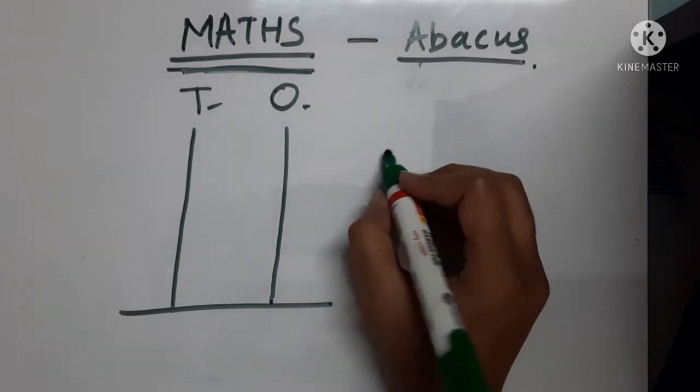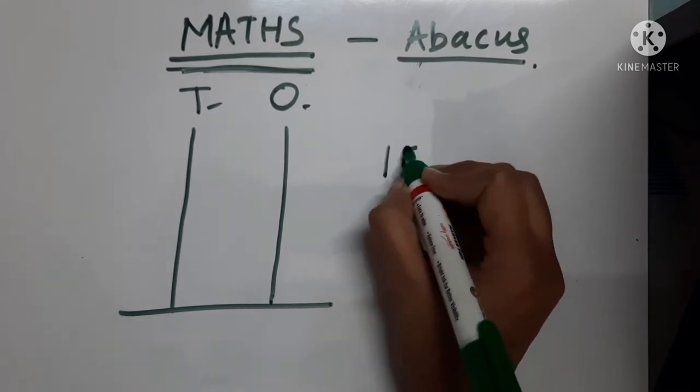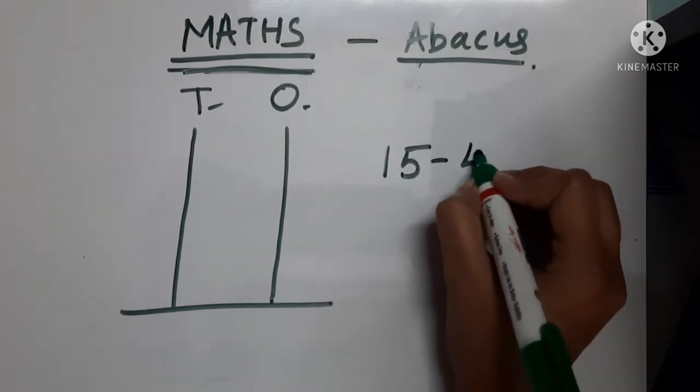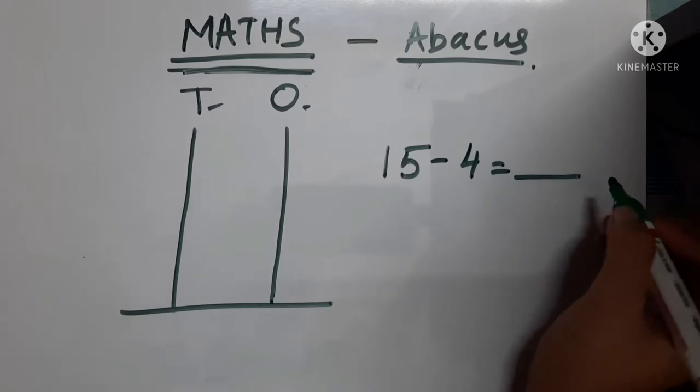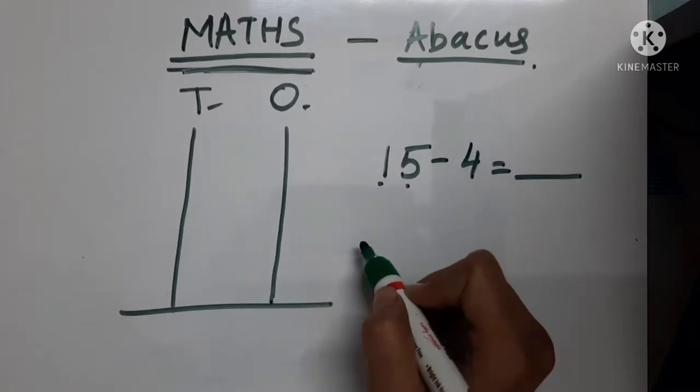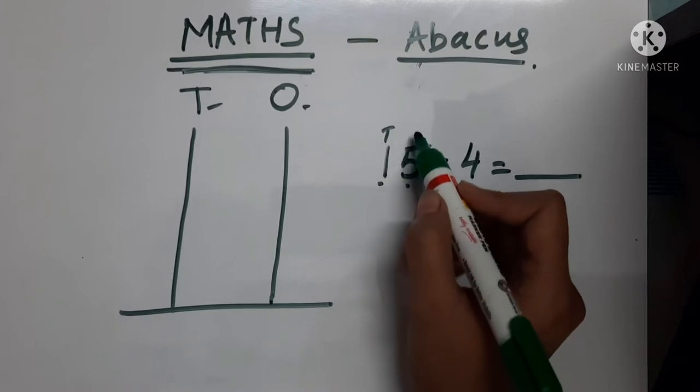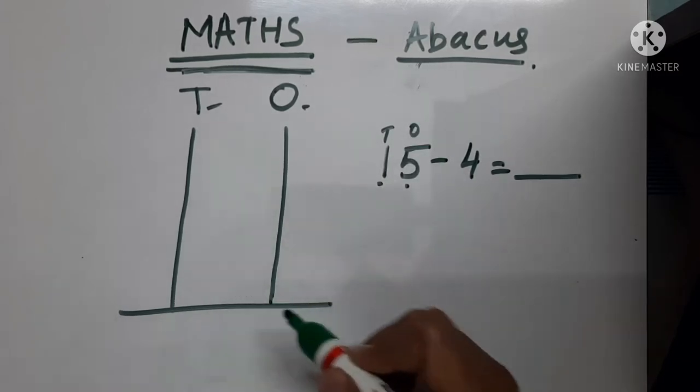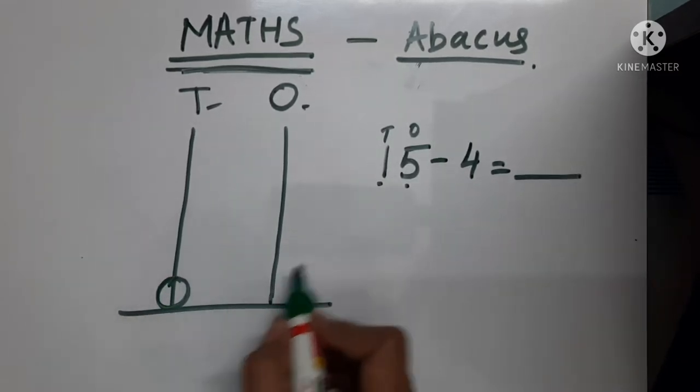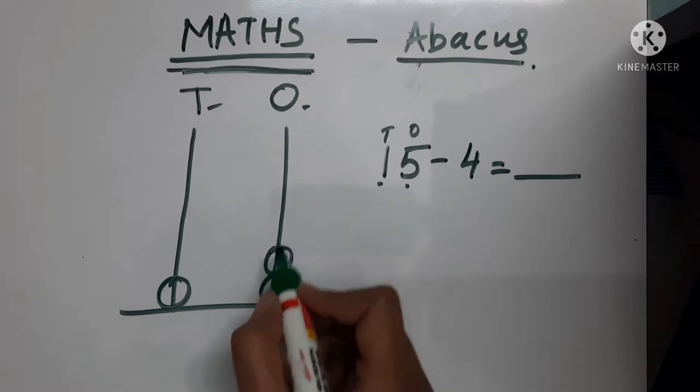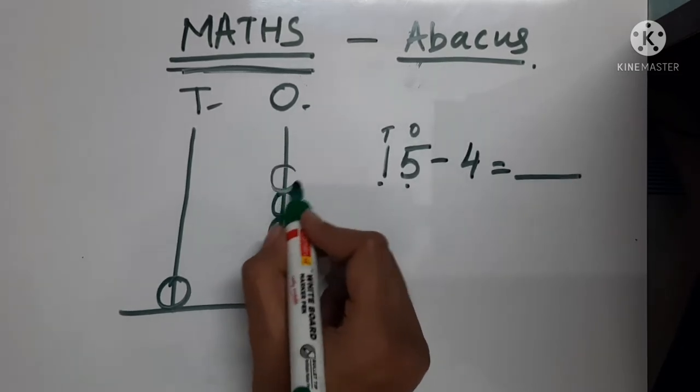So, the first question. I am giving you 15 minus 4 equals to a blank. The first number is 1, 5, 15. 1 in the place of tens and 5 in the place of ones. So, 1 and here 1, 2, 3, 4, 5.